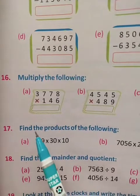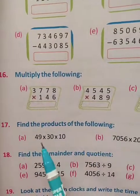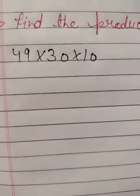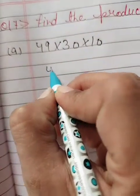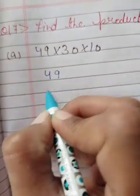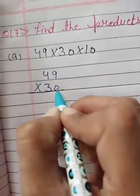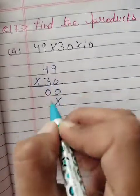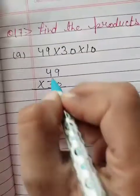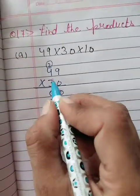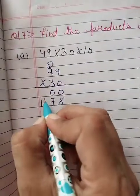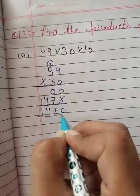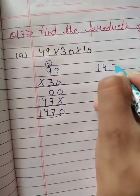Now come to question number 17: find the products of the following. Here 49 multiplied by 30. So students you will solve it like this — firstly multiply 49 by 30. 0 times 9 is 0, and 0 times 4 is 0. Then 3 times 9 is 27 — write 7 and put carry 2. 3 times 4 is 12 plus 2 is 14. So you will get 1, 4, 7, 0.